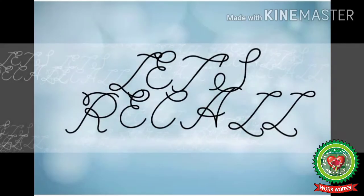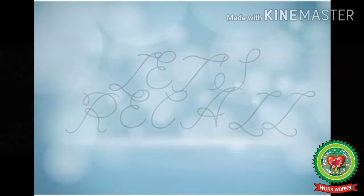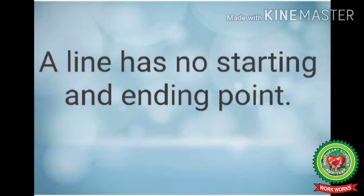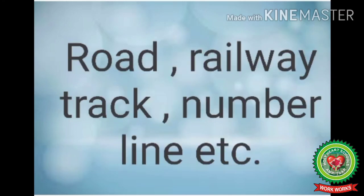Now let us recall what we have learnt today. Today we have learnt how to draw and define a line with its examples. A line has no starting and ending point. Road, railway track and number line are its examples.